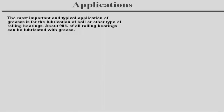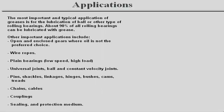The most important and typical application of greases is for the lubrication of ball or other types of rolling bearings. About 90% of all rolling bearings can be lubricated with grease. Other important applications include open and enclosed gears where oil is not the preferred choice, wire ropes, plain bearings with low speed and high load, universal joints, ball and constant velocity joints, pins, shackles, linkages, hinges, bushes, cams, treads, chains and cables, and couplings.